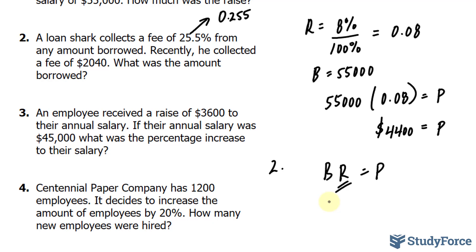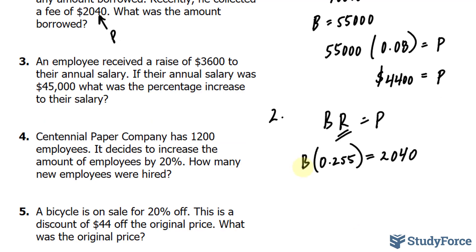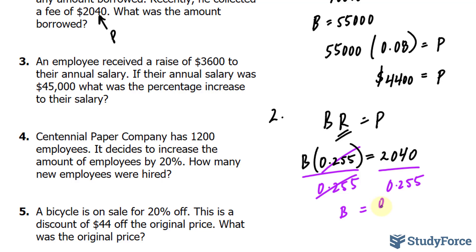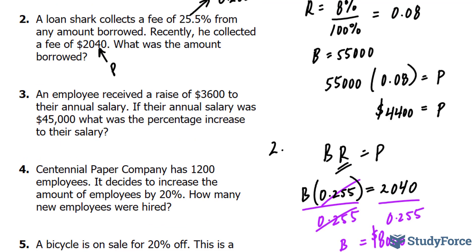We're told that he recently collected a fee of $2,040. That's a portion of an amount that we don't know. The amount that we don't know is the amount that was borrowed. So a percentage of an amount that we don't know amounts to $2,040, and so this number represents our portion. Our base value is the initial amount borrowed. So we have this equation, which we can easily solve. We can divide both sides of this equation by 0.255. And this will isolate B. So canceling that out, we end up with our base value, the amount that was borrowed, being $8,000. So if you borrow $8,000 at a rate of 25.5%, expect a fee of $2,040.